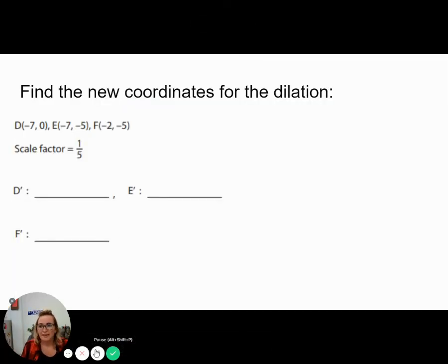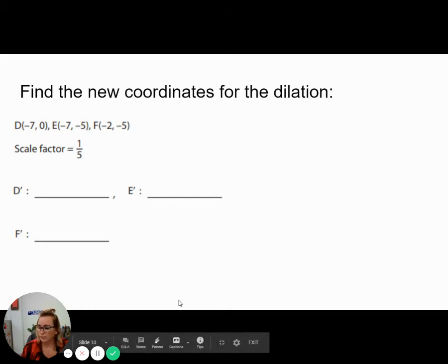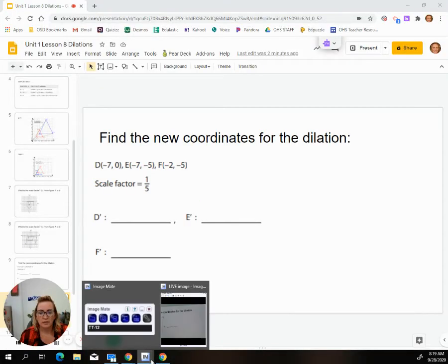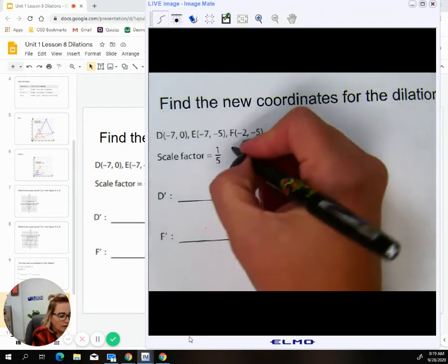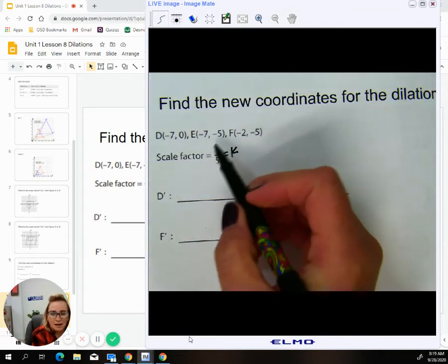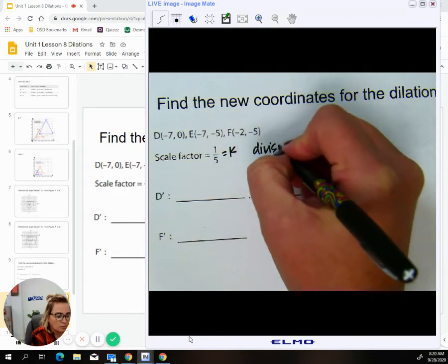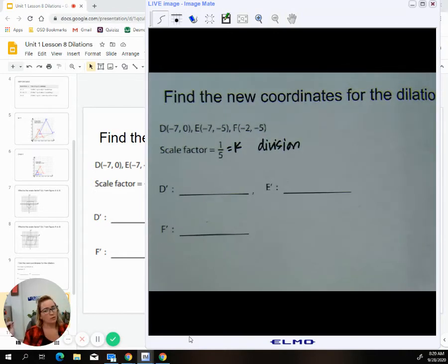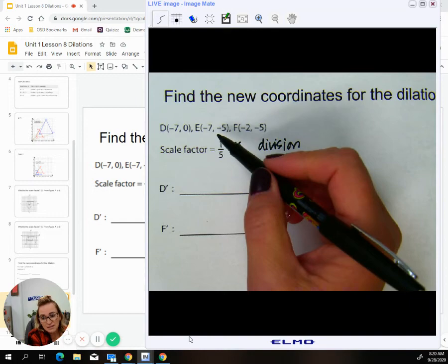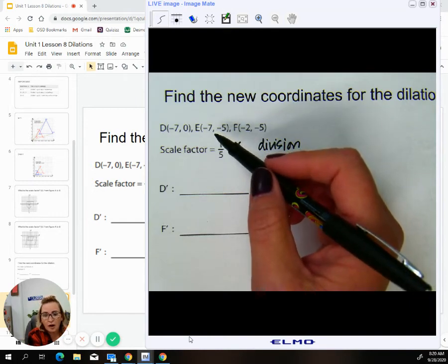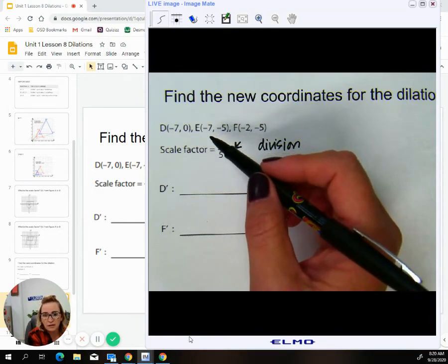So now we're going to try this for a K is less than one or between zero and one. And again, remember, when we go through this, that this value right here is K. And because it is between zero and one, it is going to be division that we're doing here. Multiplication when we go for an enlargement, division when we go for a reduction. So you're obviously going to have some fractional answers when you divide. They're not always going to come in perfectly equal.